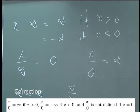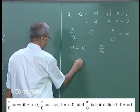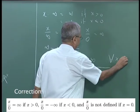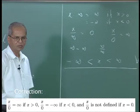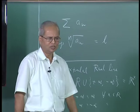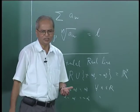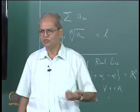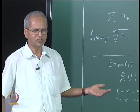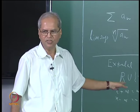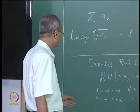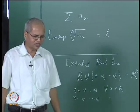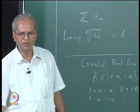Regarding the order: for every real number x, minus infinity is strictly less than x, and x is strictly less than plus infinity. This has some convenience. For example, if a monotonically increasing sequence is bounded above, then it converges. But using the extended real line, we can say any monotonically increasing sequence either converges or diverges to infinity. Similarly, a monotonically decreasing sequence either converges to a real number or diverges to minus infinity. Some books use the notation 'converges to plus or minus infinity,' but we shall not use that.